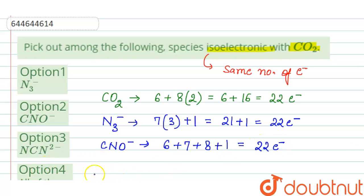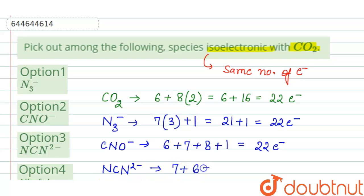Now in NCN²⁻, the number of electrons in nitrogen is 7, plus carbon is 6, plus nitrogen is 7, and since there are two negative charges, plus 2. That equals 22 electrons.